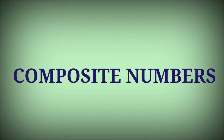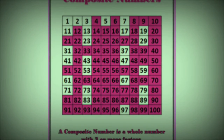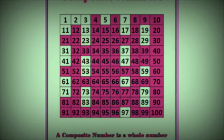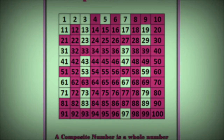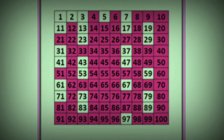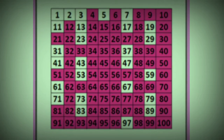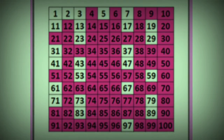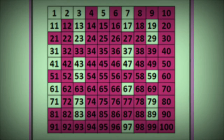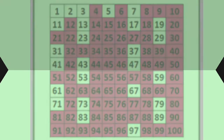Next, composite numbers. What are composite numbers? A composite number is a whole number with three or more factors. For example, 4, 6, 8, 9, 10, etc. 4 is the least composite number and 2 is the least prime number.